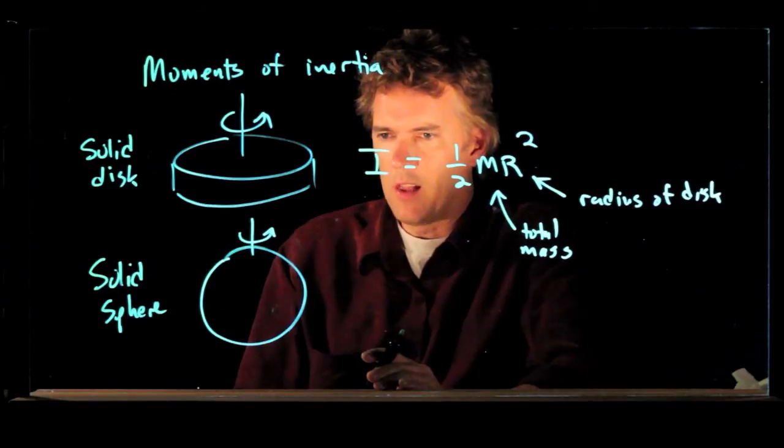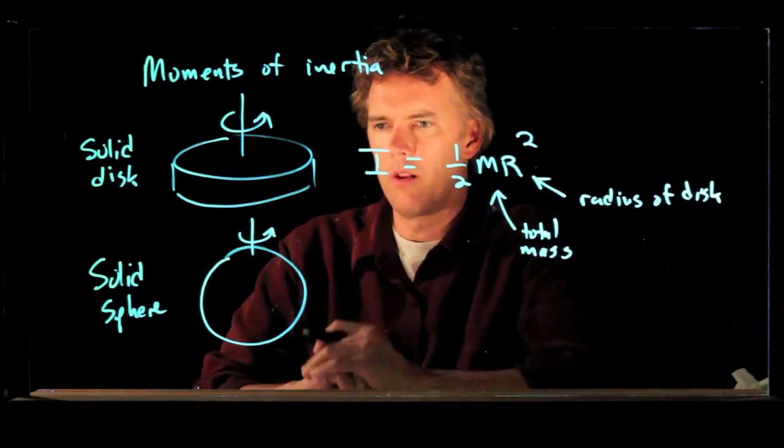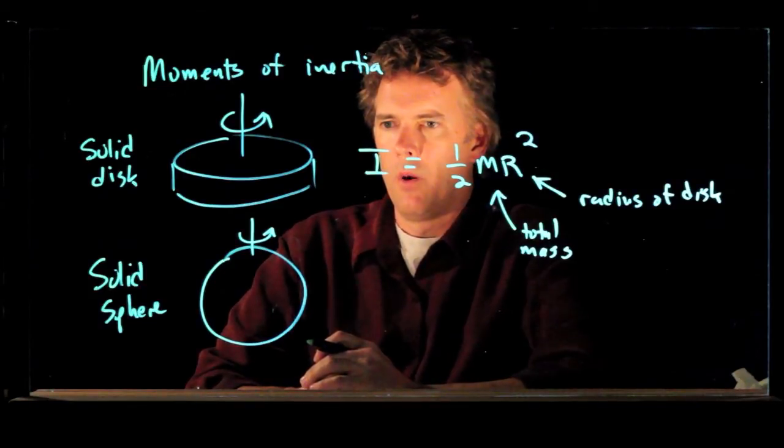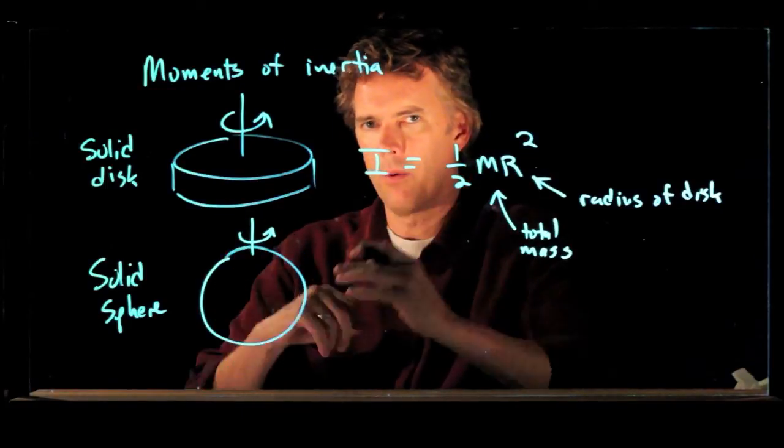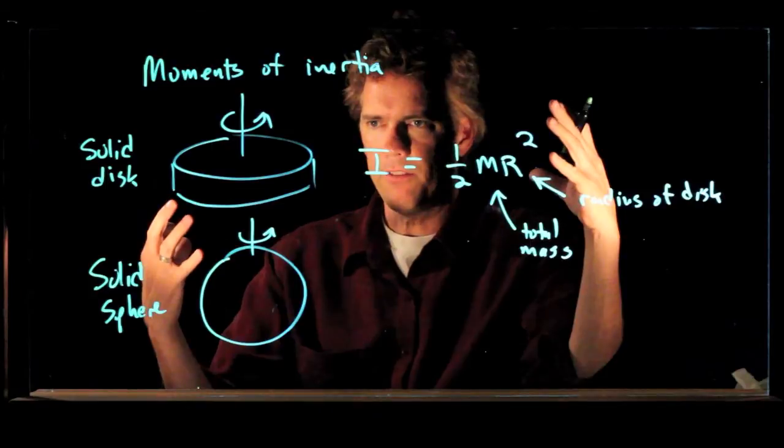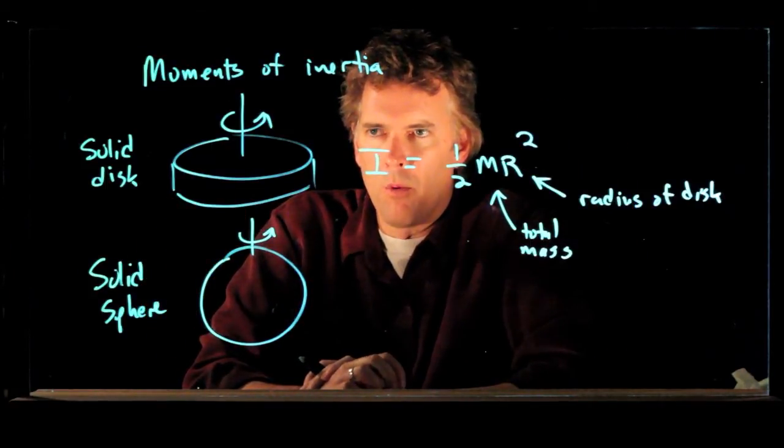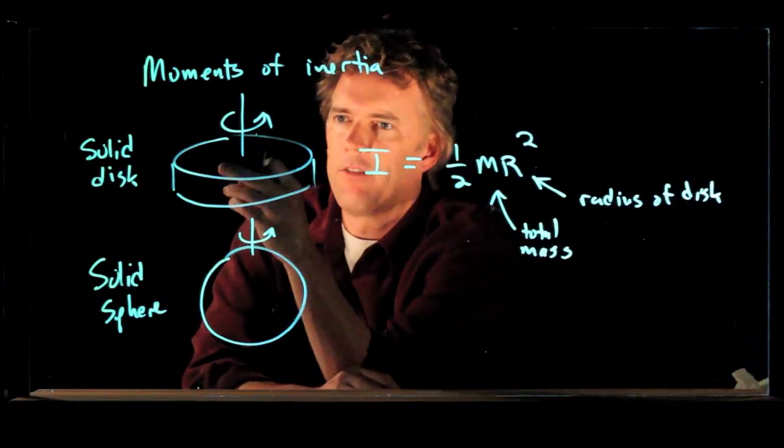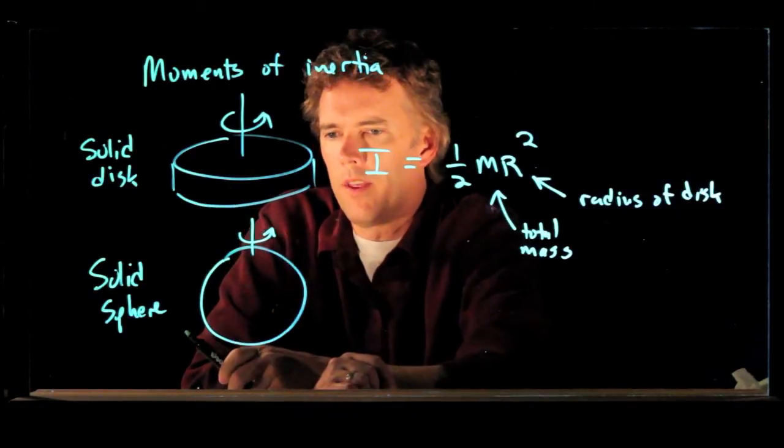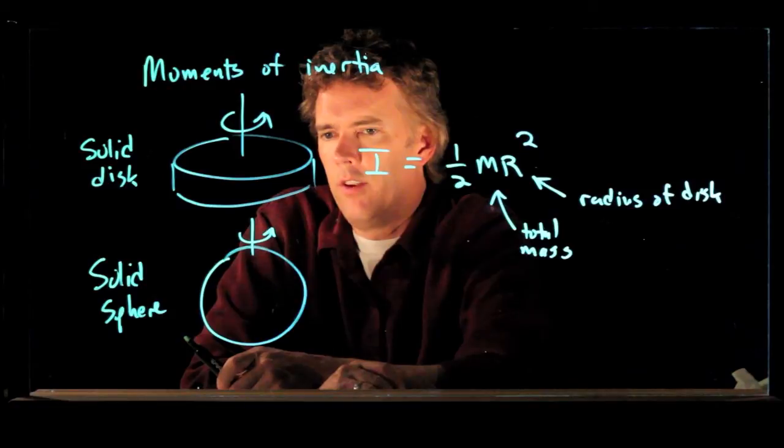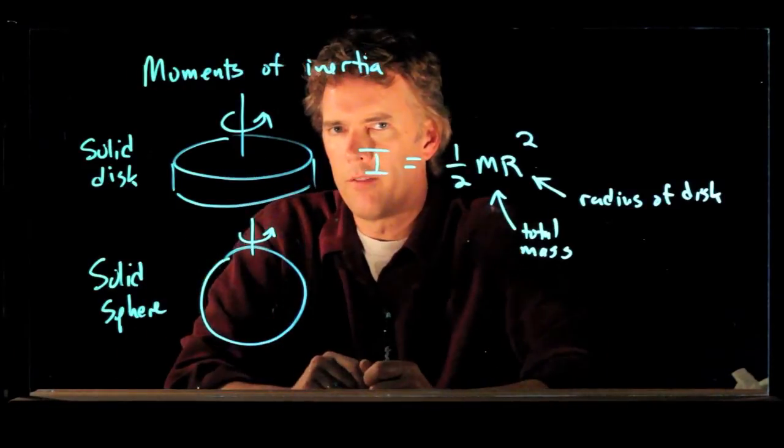Should this solid sphere have a bigger moment of inertia or a smaller moment of inertia than the solid disk? Well, remember the moment of inertia goes like m sub i r sub i squared. So if I put more mass away from the axis of rotation, it should have a bigger moment of inertia. So is there more mass farther away from the axis of rotation in the case of the solid disk? Or in the case of the solid sphere? I think you can convince yourself that the solid disk, in fact, has more mass farther away from the axis of rotation.